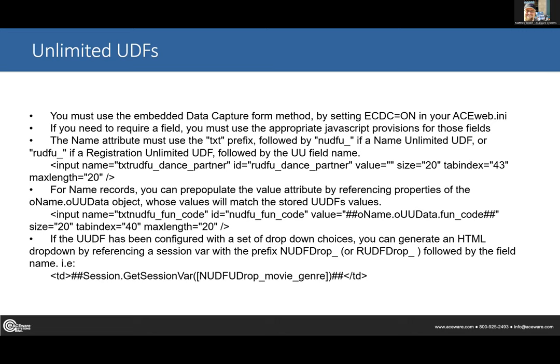For name record unlimited UDFs, you can also pull data out. If you've got a 'fun_code' field, you can pull that out with 'own.name.o_uu_data.' followed by the field name. So if they filled in a data capture page in the past, it will pull that value back out and show it on the supplemental data capture page — they can change it if needed or confirm it's still the same. If it's a drop-down, you can use 'session.get_session_var' with 'name_udf_drop' or 'reg_udf_drop' followed by an underscore and the field name.